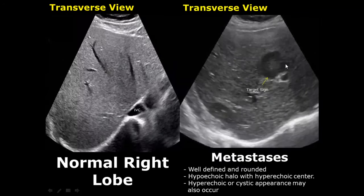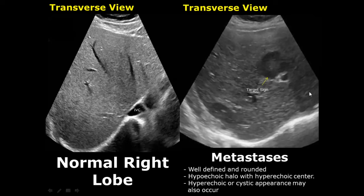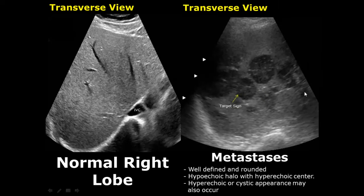Metastases in the liver are well defined and rounded. They will have a hypoechoic halo — the outer region is hypoechoic — and will have a hyperechoic center. This type of appearance is called a target sign or bullseye appearance, and it is very specific to metastatic lesions.